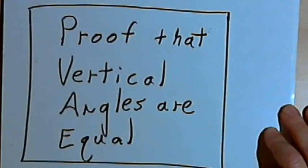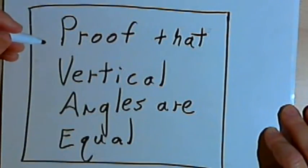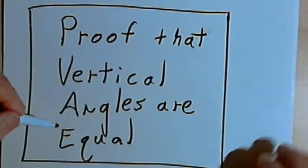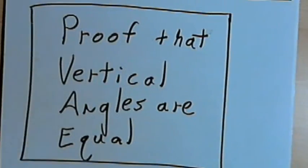This video is provided as supplementary material for courses taught at Howard Community College. In this video I'm going to do a proof that vertical angles are equal. This is a fairly easy proof. Here's how it goes.